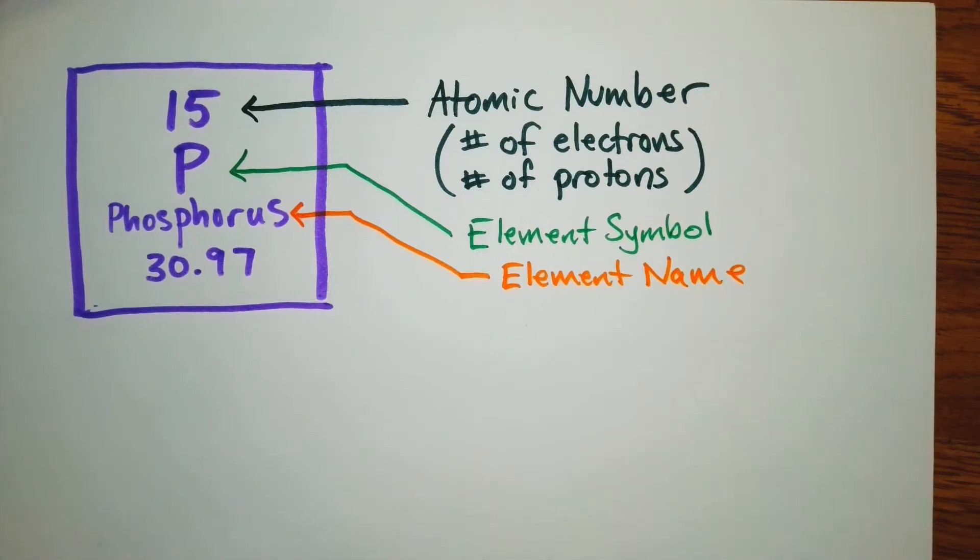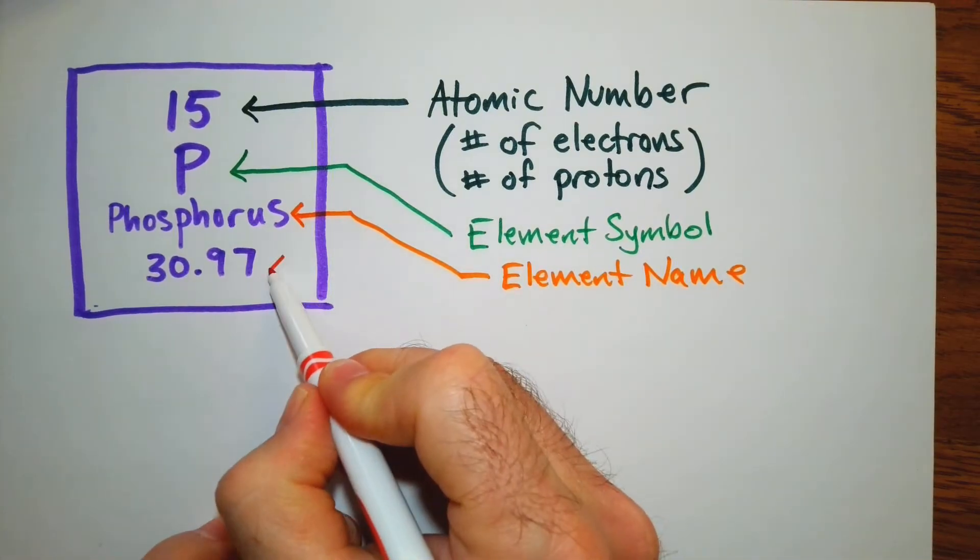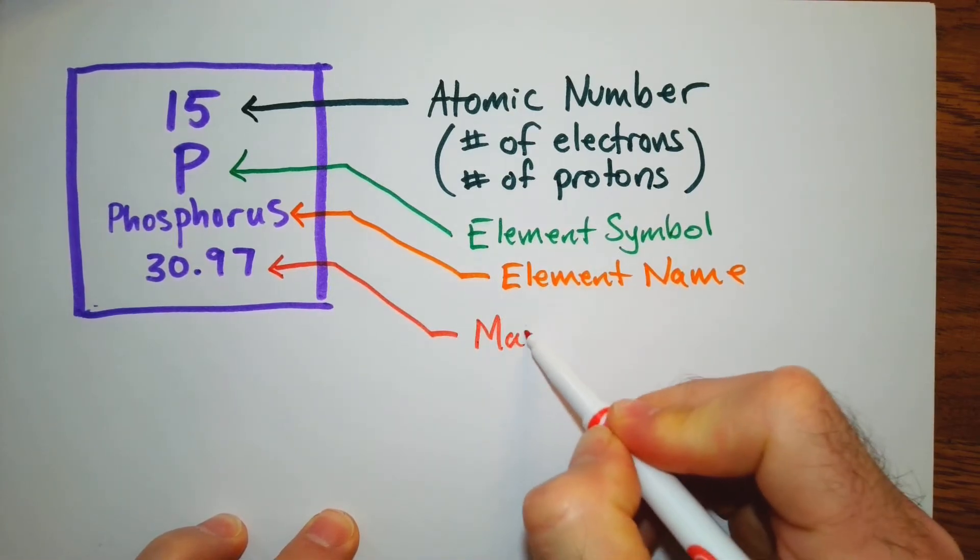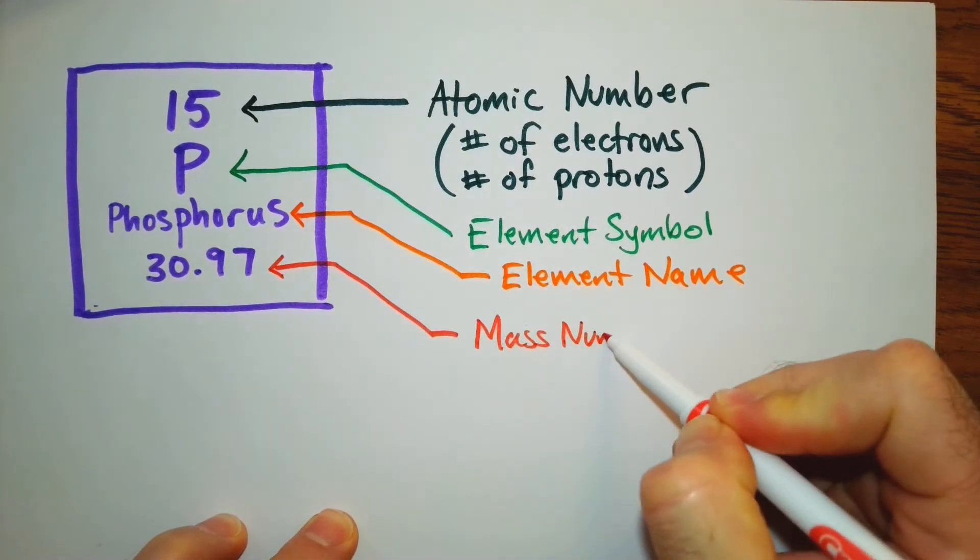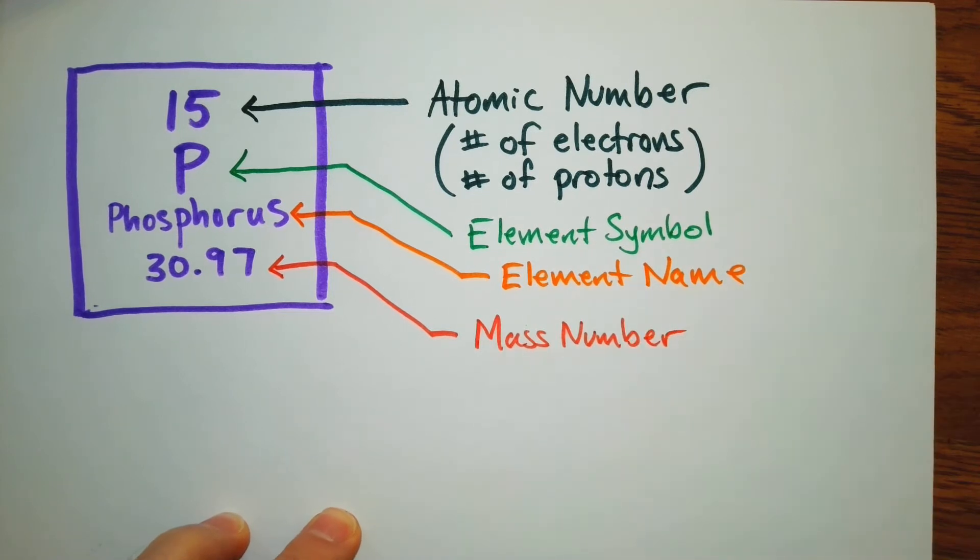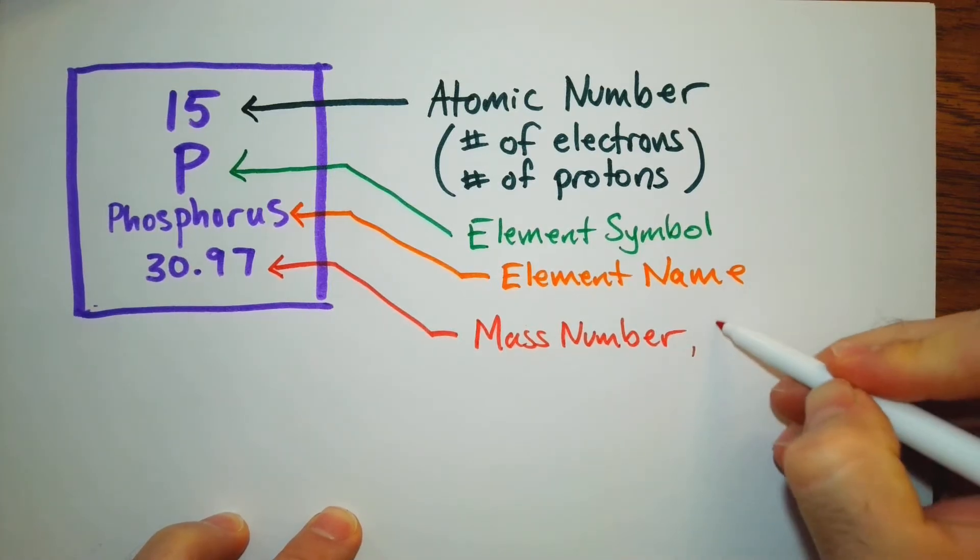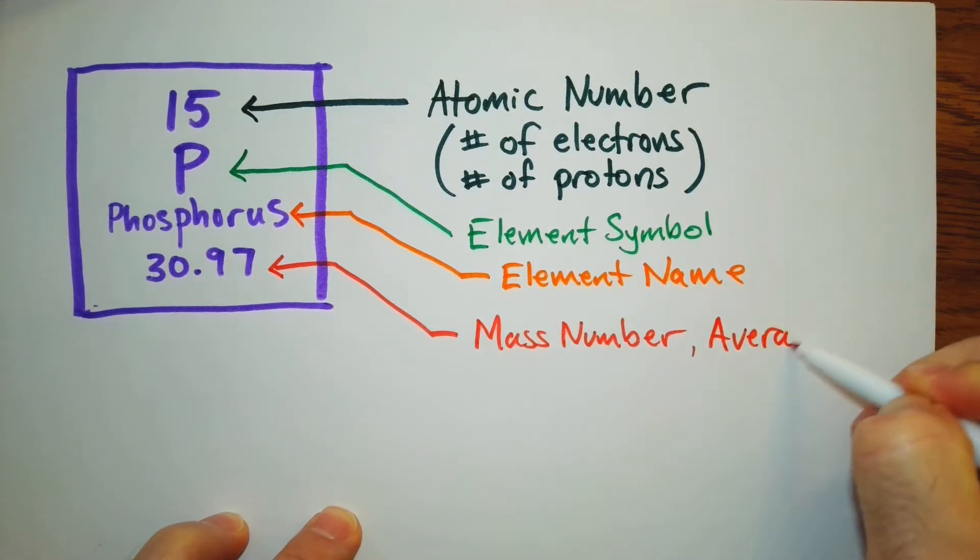And then finally, what we have here is the mass number. It does have other names. Sometimes you might hear just atomic mass. Other times you also might hear it being called the average atomic mass.